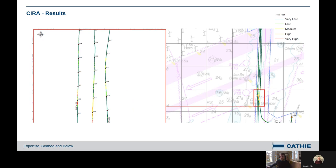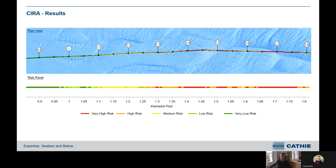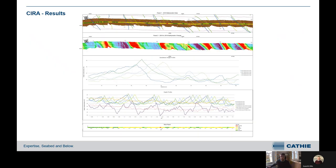As an output, we initially provide the risk profile of a set of cables in a traffic light system, showing the total risk in a management system and presenting that in an alignment chart format. This shows the cable risk and provides that information to the client about where problems may be. This is then taken forward into remediation planning — whether we do more targeted surveys on higher-risk areas — and presented using alignment chart layouts with risk panels showing repeat bathymetry changes.